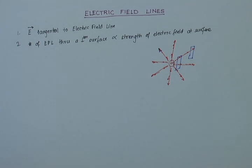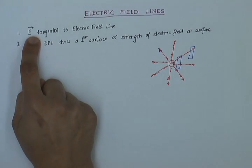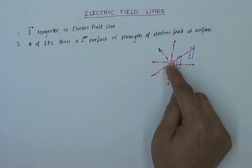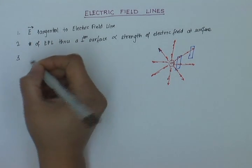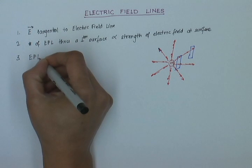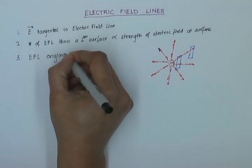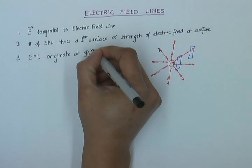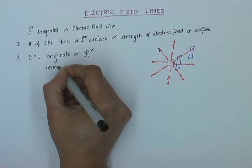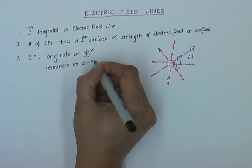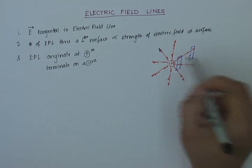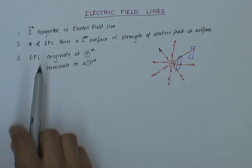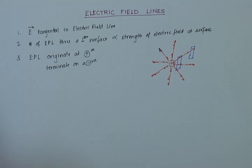It follows that because E is tangential to the electric field line at each point, the lines go away from a positive charge and come towards a negative charge. So the third rule is that electric field lines originate at a positive charge and terminate on a negative charge. If you just have a positive charge, we assume all the electric field lines terminate on a negative charge at infinity.